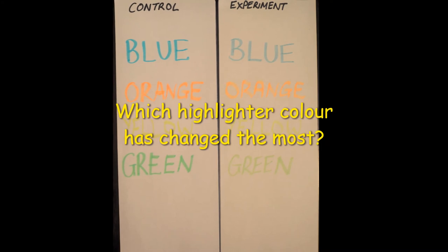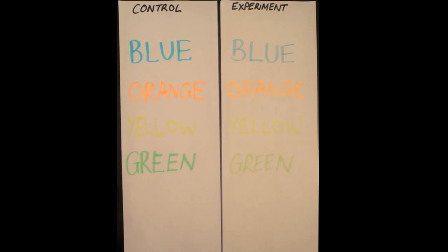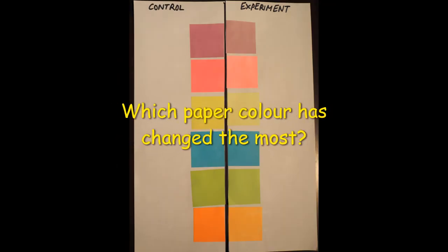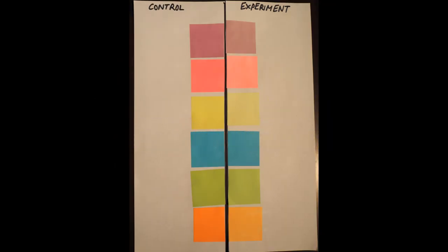Now compare the control and experiment papers. Which highlighter color changed the most? Which paper color changed the most? Was your prediction correct?